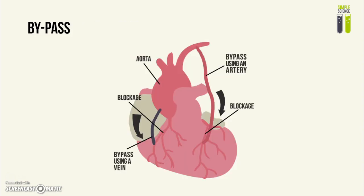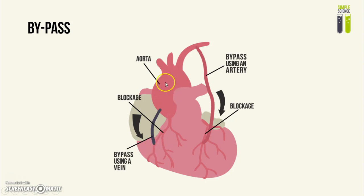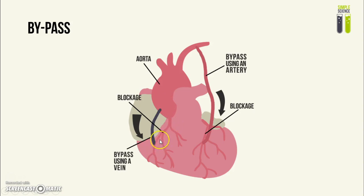Another method would be bypass. This is basically taking a blood vessel from another part of the body and then attaching that vessel surgically to the part above or below the part that has been blocked with plaque, which then allows blood flow to go from the aorta straight to the heart tissues.